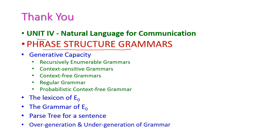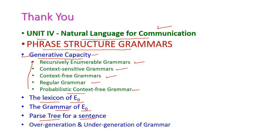So far we have seen phrase structure grammar from the fourth unit, natural language communication. Under this topic we have seen the generative capacity — all four types of grammars: recursively enumerable grammar, context-sensitive grammar, context-free grammar, regular grammar, and probabilistic context-free grammar. After that, we have seen the lexicon for language E0, grammar for language E0, parse tree for a given sentence, and over-generation and under-generation of grammar. In the next class, we will see another important topic from the fourth unit. For more information, please go through our textbook. Thank you.